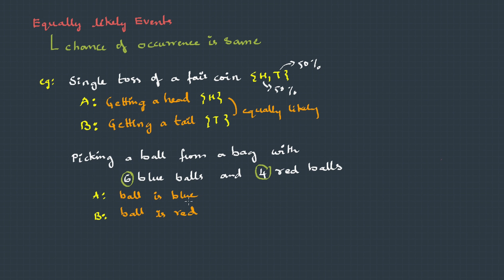So when we try to pick up a blue, there are 60% chances of getting blue ball and 40% chance of getting the red ball. Therefore, these are not equally likely.